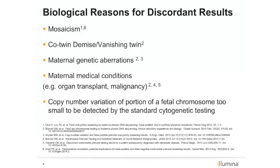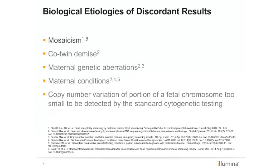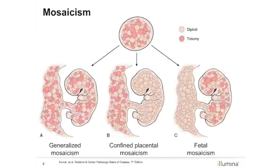Listed on this slide are examples of biological phenomena that can affect the cell-free DNA and thus the results of NIPT. We will delve into each one of these in more detail. First, a closer look at mosaicism. Mosaicism occurs when all cells in an individual are not comprised of the same genetic material.